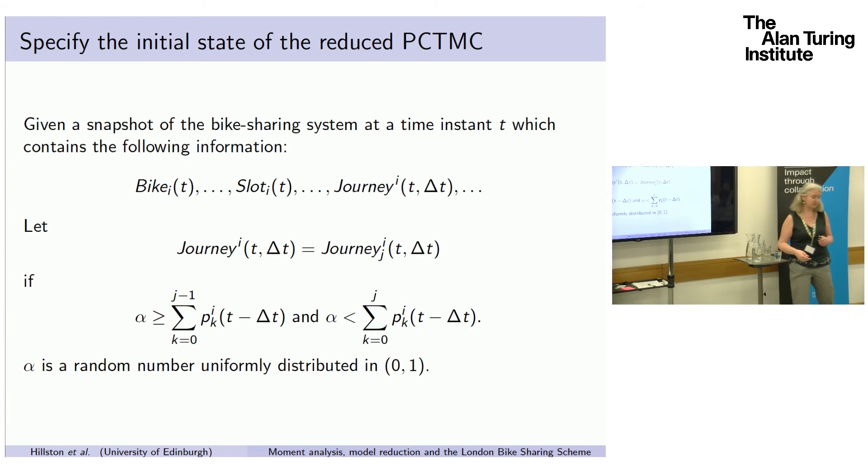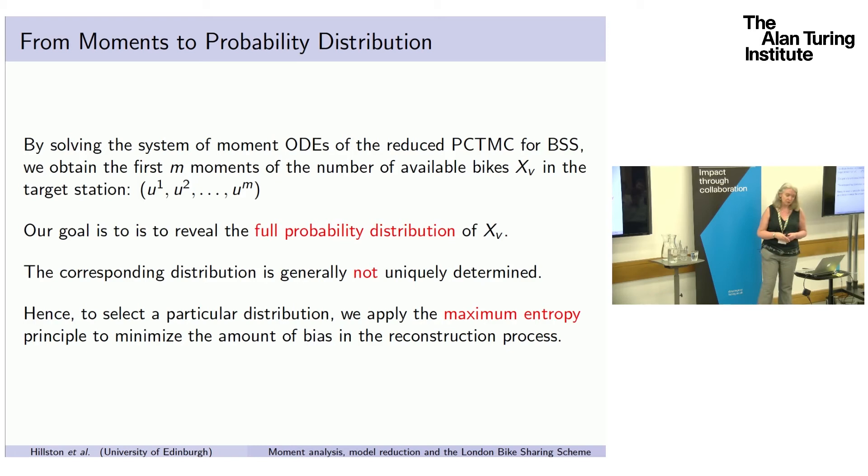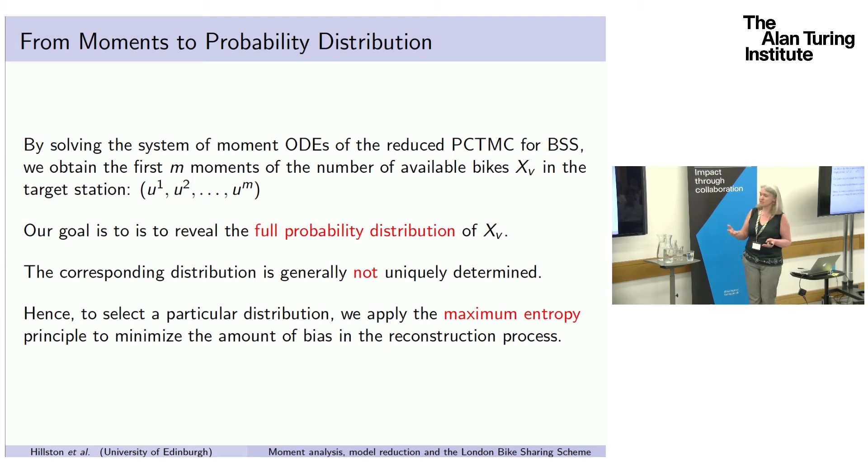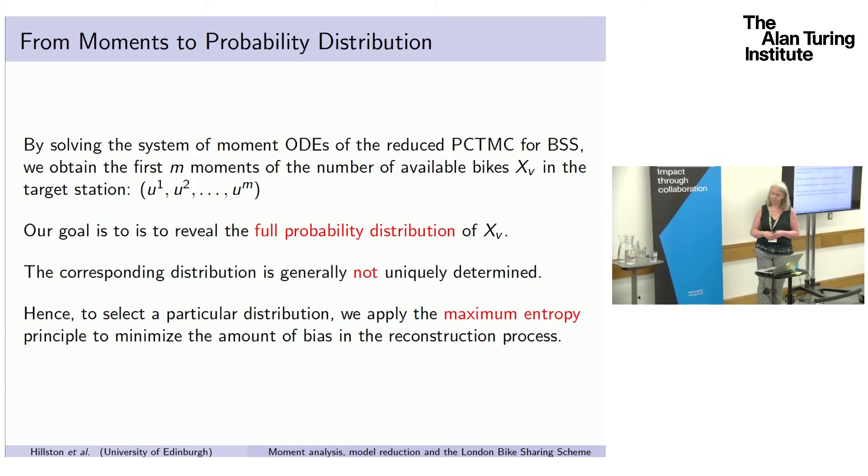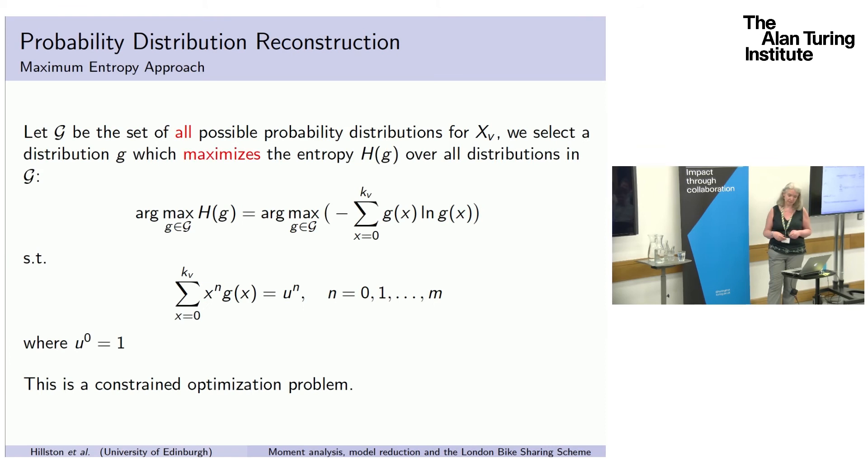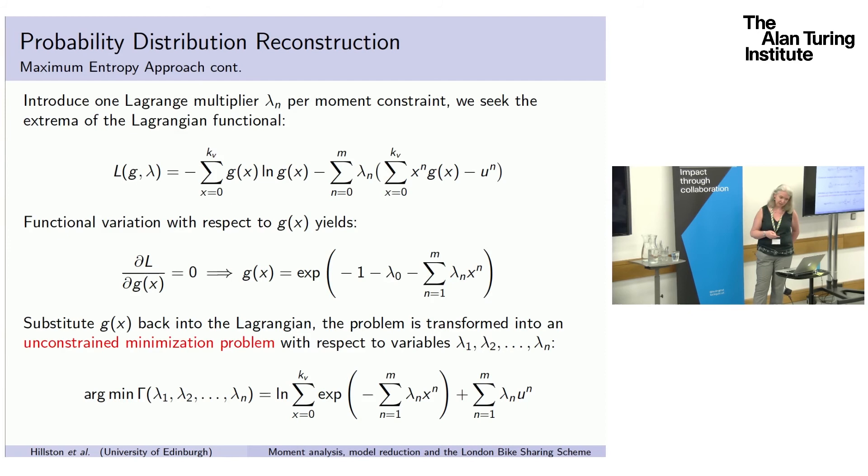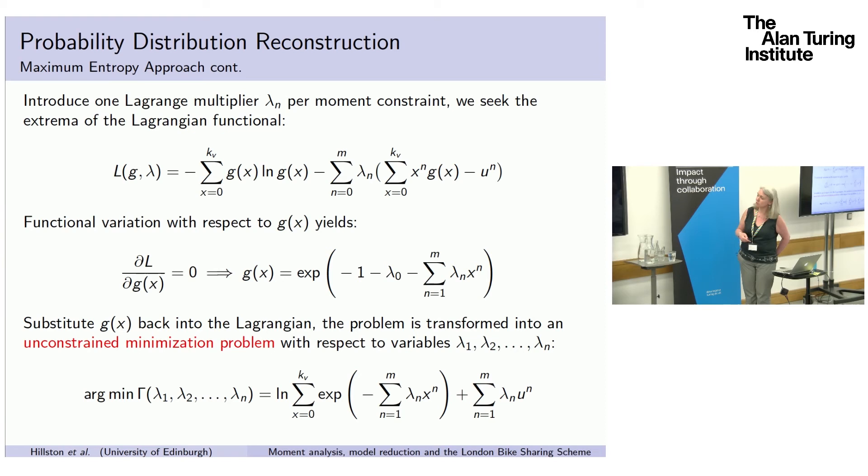If we solve the system of moment ODEs for this reduced system, which is much more feasible because we've got only now about usually less than 20 stations in our system, we can build the full probability distribution for our random variable, which is our prediction of how many bikes are there on our time horizon. Of course, the distribution is not uniquely determined and we use maximum entropy to do the best fit that we can with the moments that we've calculated. So this is fairly straightforward. We set this up as a constrained optimization problem and then use the Lagrangian multiplier formulation to turn that into an unconstrained problem and then find our best prediction of what the distribution is. We then use that to make our predictions to the users.